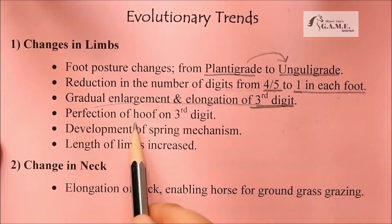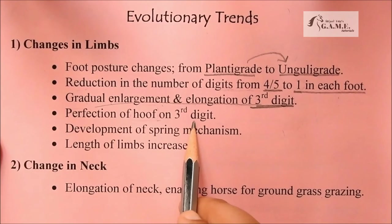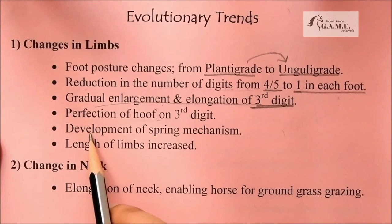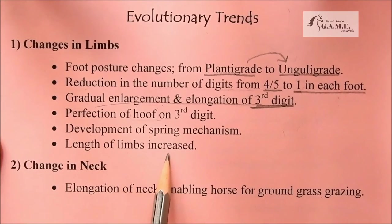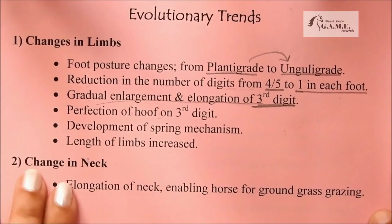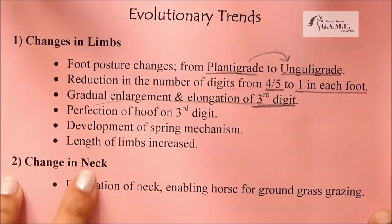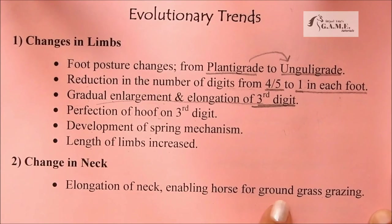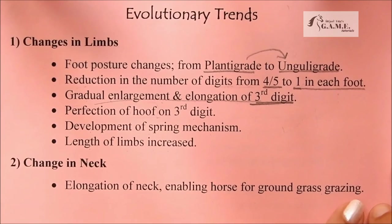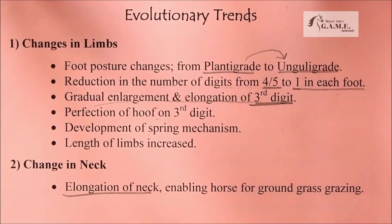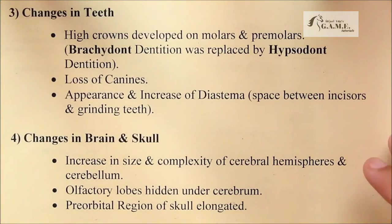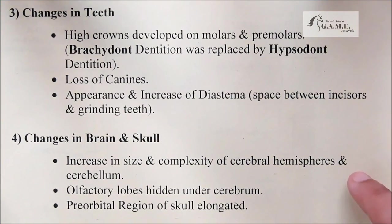Further changes in limbs include perfection of the hoof on the third digit, development of a spring mechanism, and an increase in the length of limbs. In the neck, we have elongation of the neck, enabling the horse for ground-grass grazing.